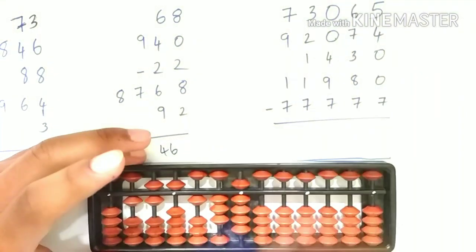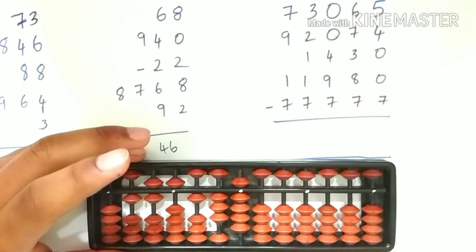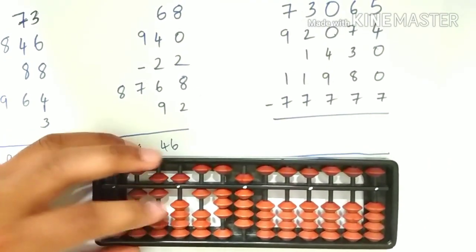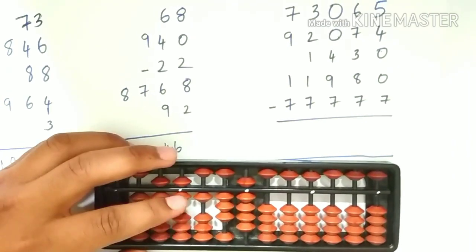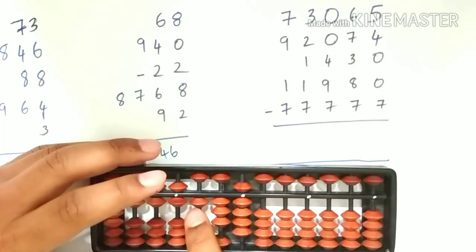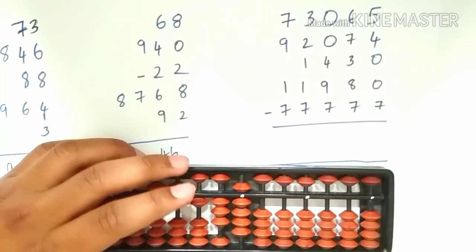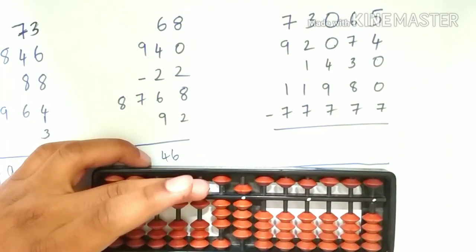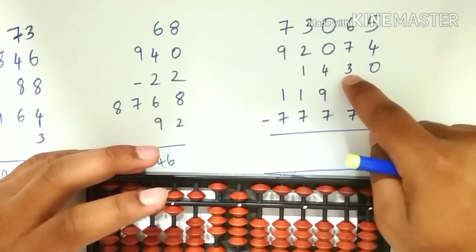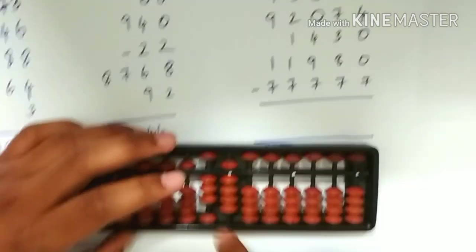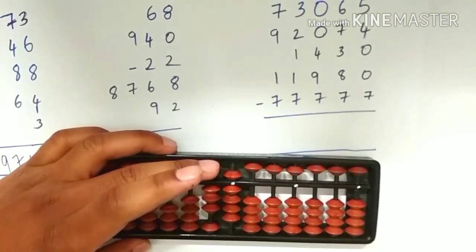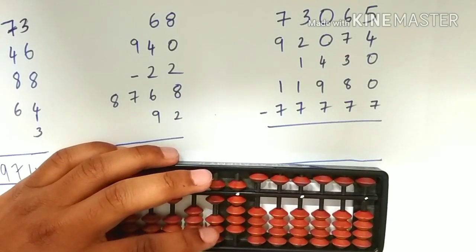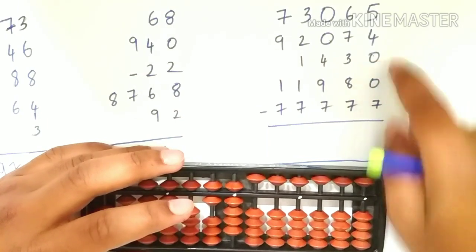Next 1430, which is a 4 digit number, so we will have to add it from the 1000 slot. 1 is done. Next 4: to add 4 on the 100 slot, here we have 1, so we can use small friends addition — add the friend 5, less the friend 1. Adding 3 on the 10 slot, here we can use small friends addition again — add the friend 5, less the friend 2, because 2 is a friend of 3 in small friends. Next 0 — nothing.